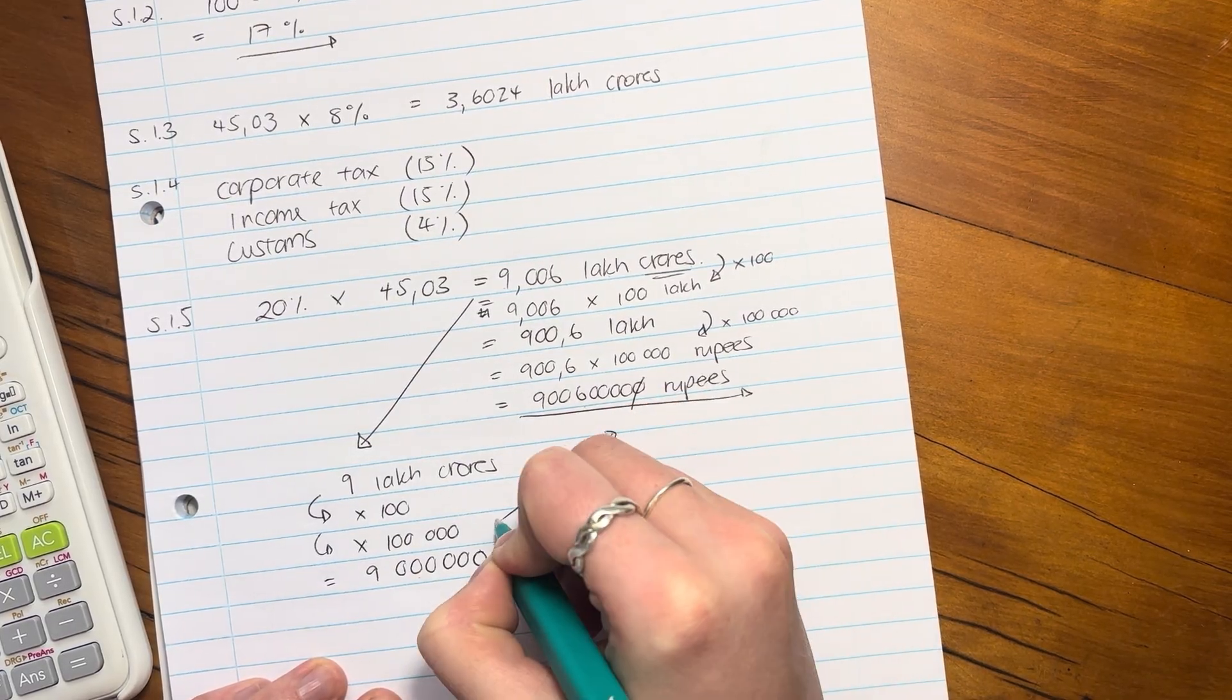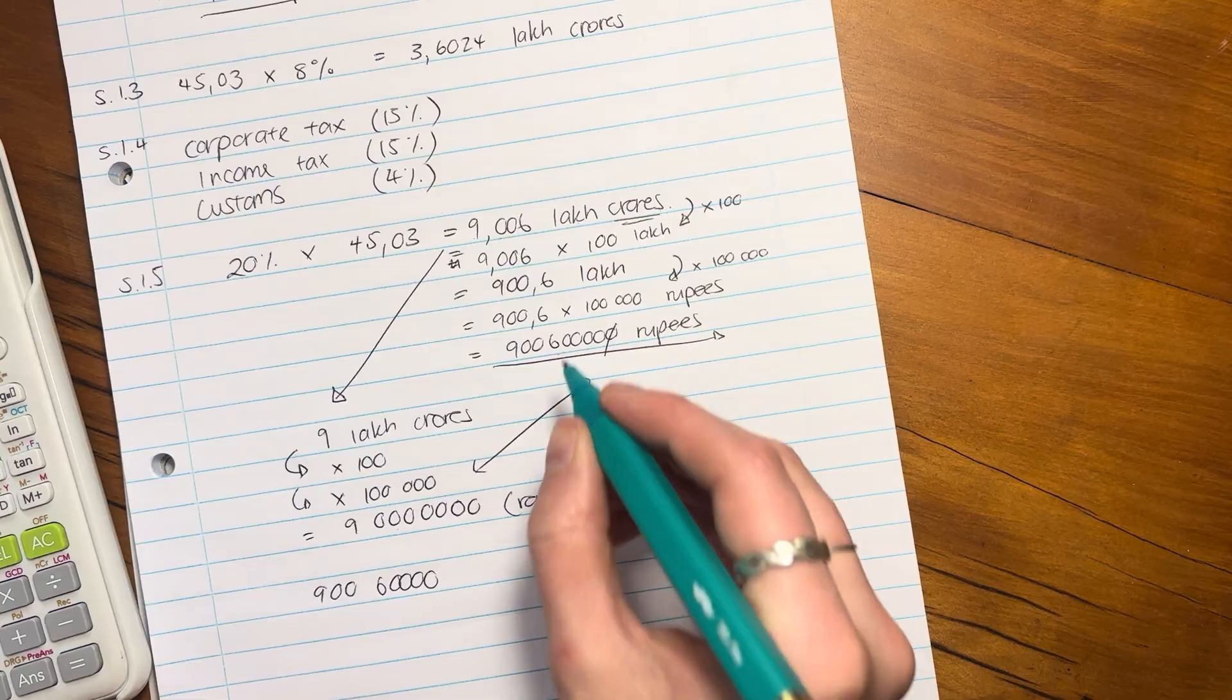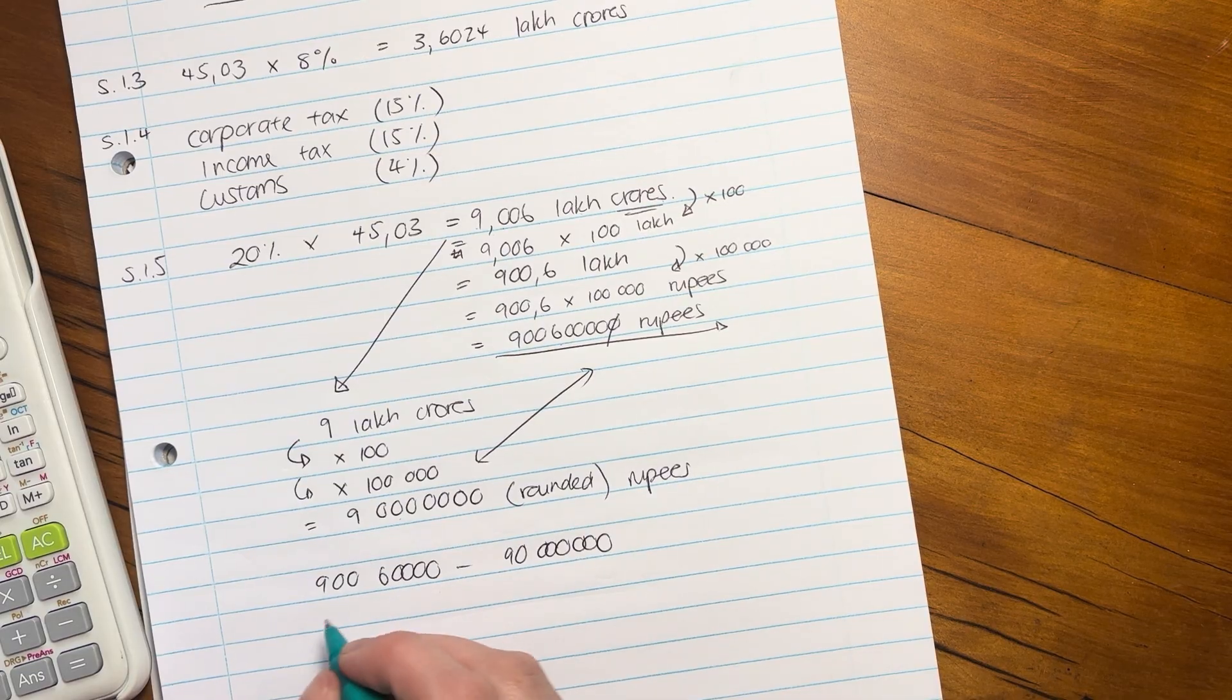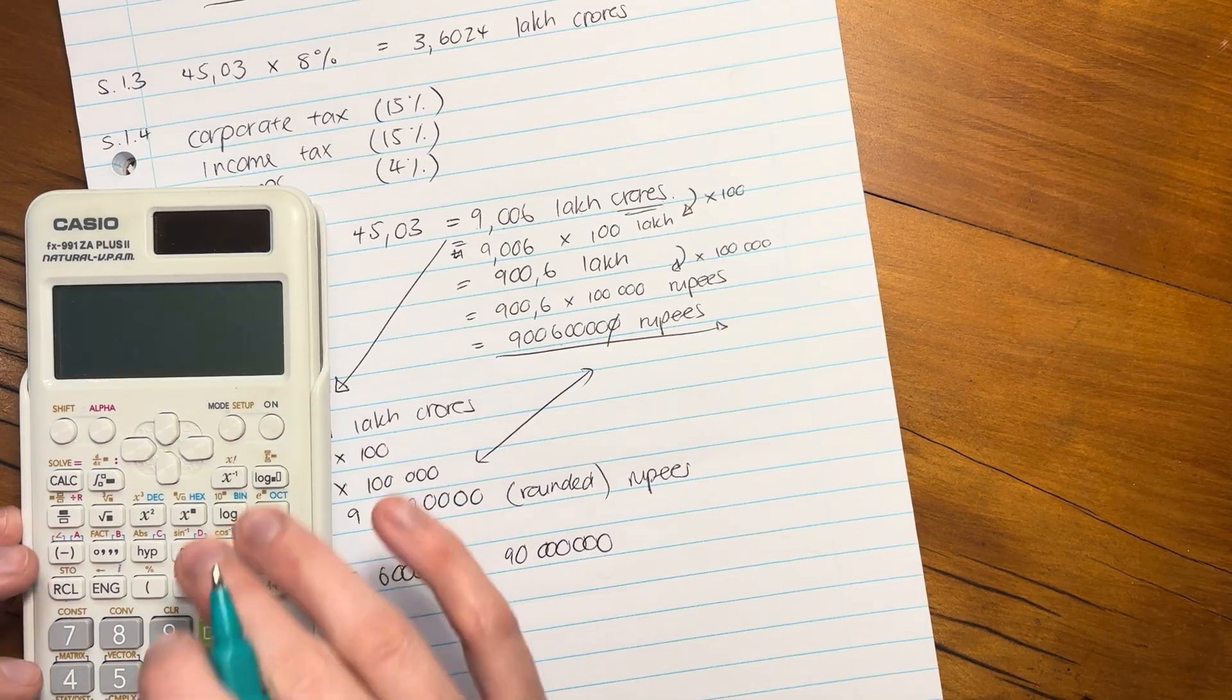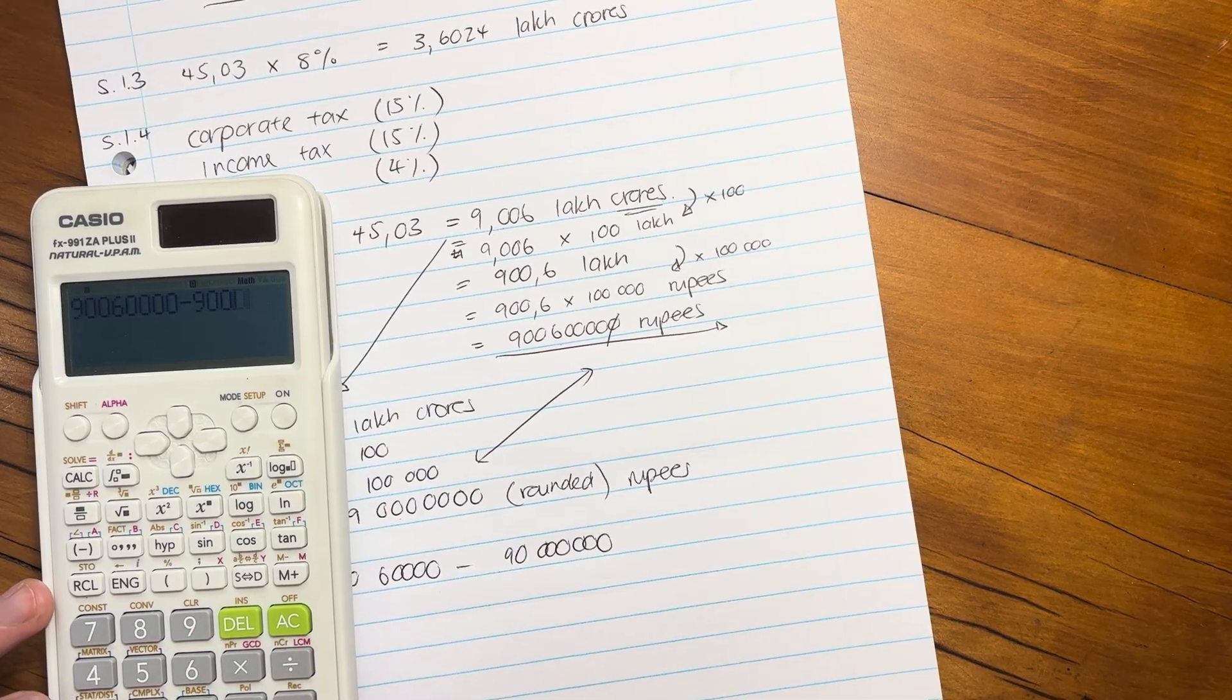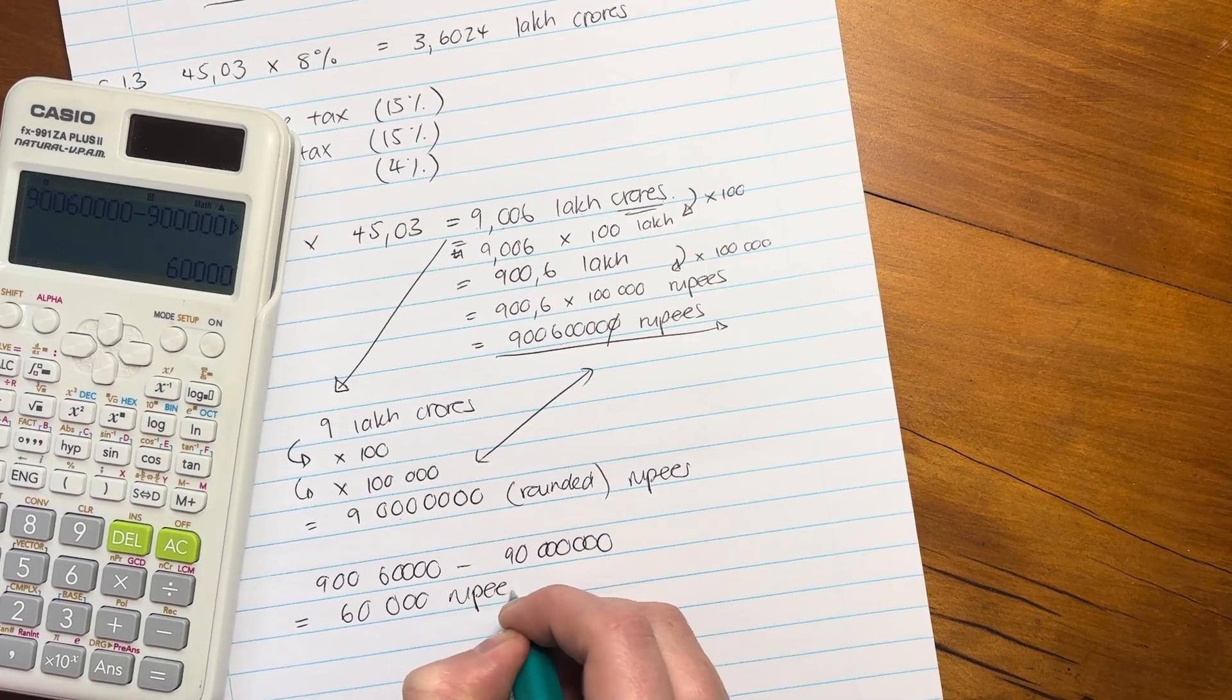So now we have to compare these two to each other. So in order to do that, we say that number minus that number. And what you'll see is you'll see the difference. 900,612,345 minus 900,000,000. And the difference is 60,000 rupees.